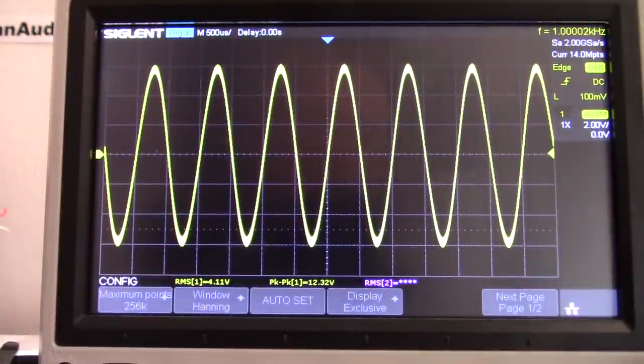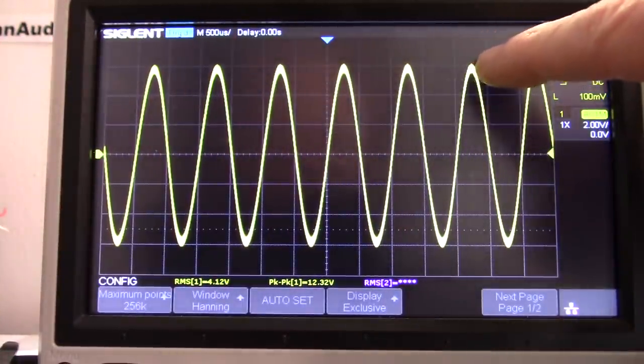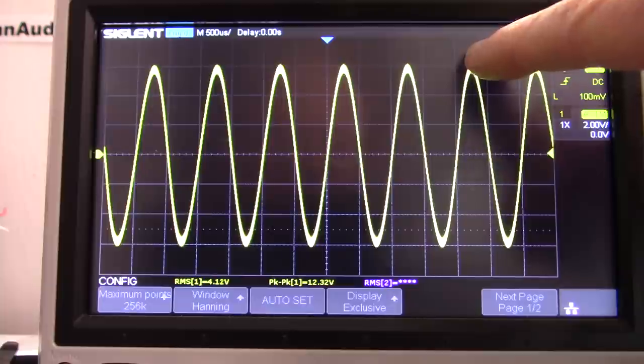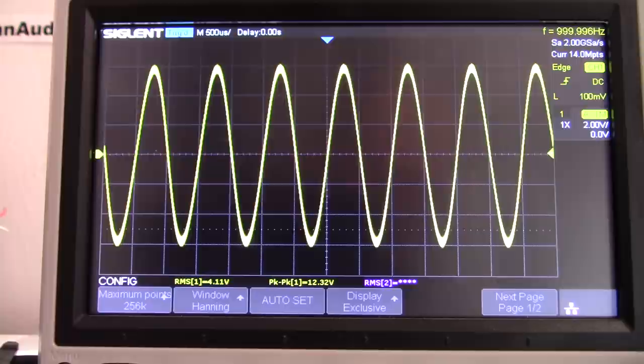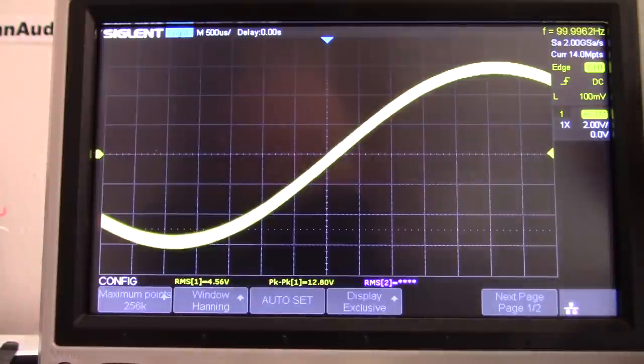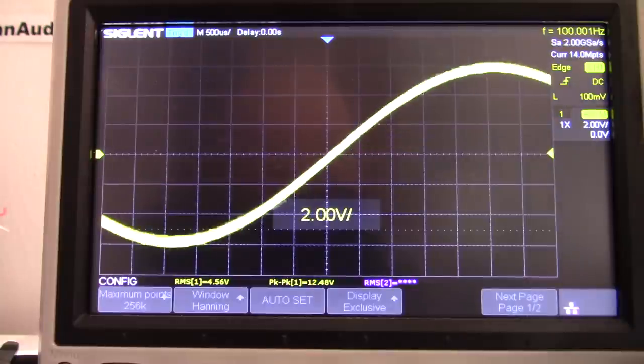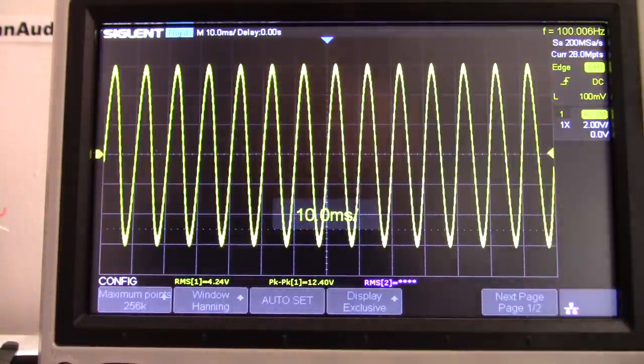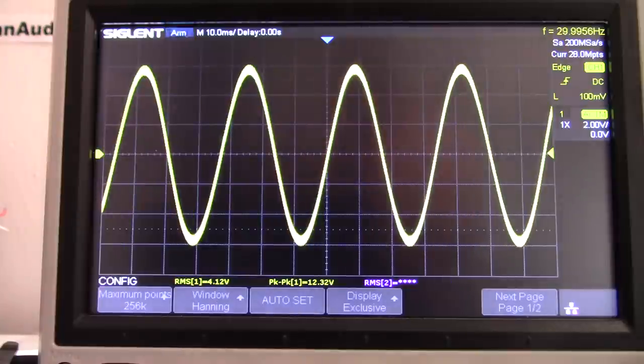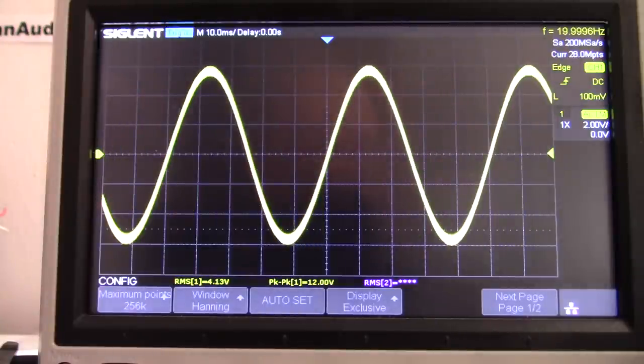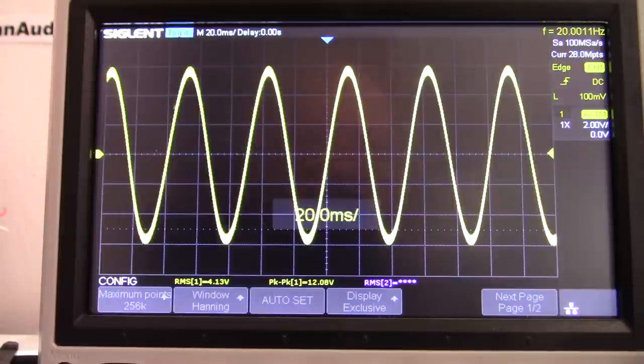Frequency response test. So at 1 kilohertz, I set my base or 0 dB level using this graticule. Now I'll just vary the frequency and see what we get. We're getting some noise on the line - I think that's from my function generator here. That's very good to see. We're at 20 hertz, and the frequency response is staying flat.